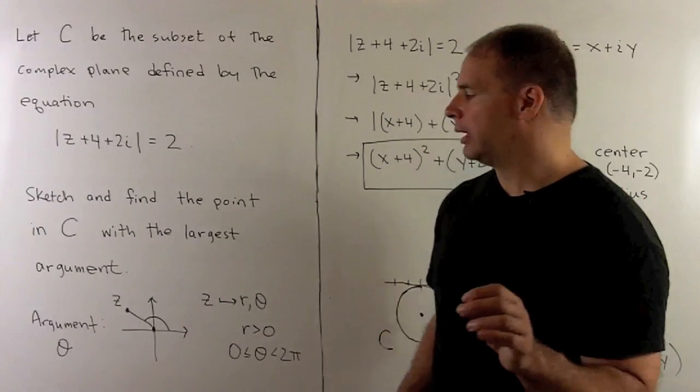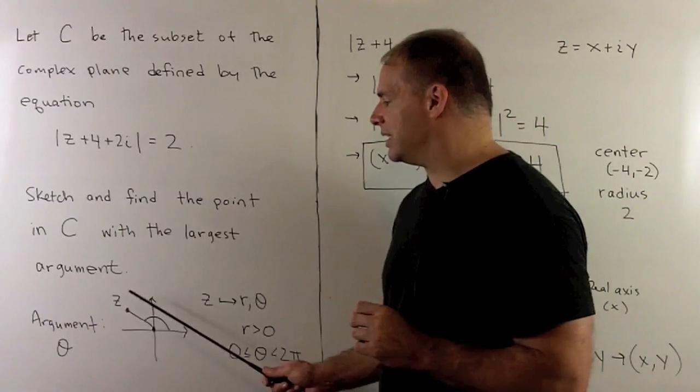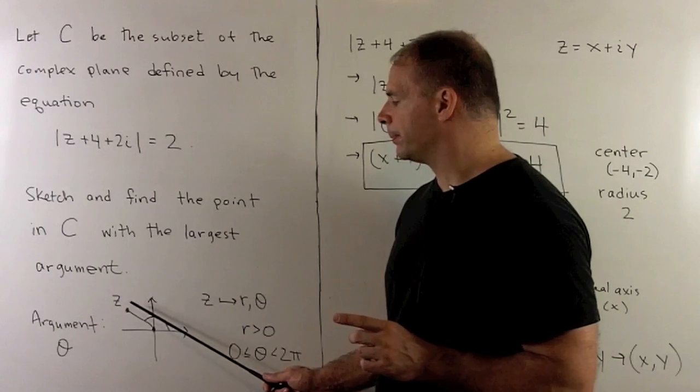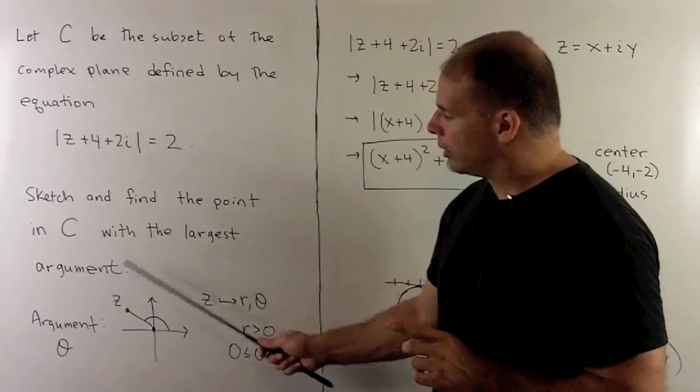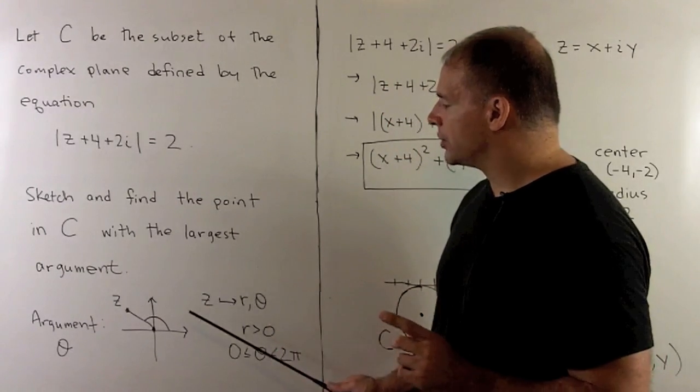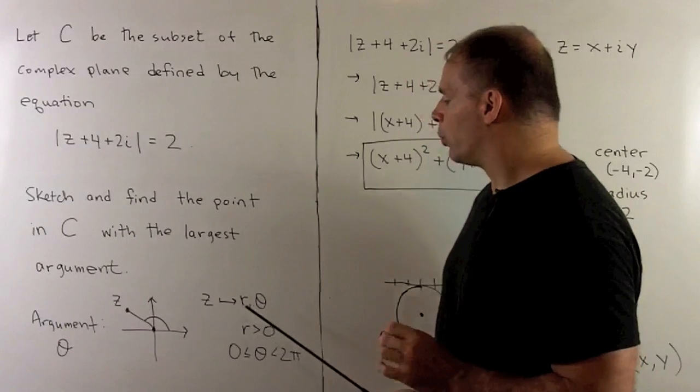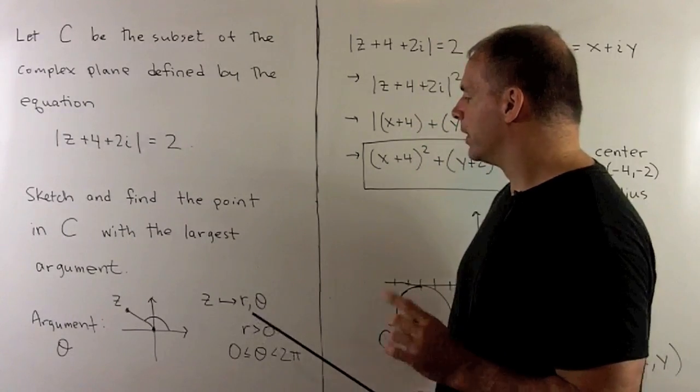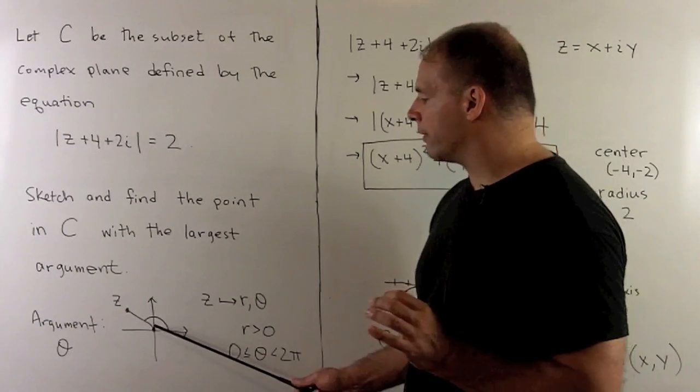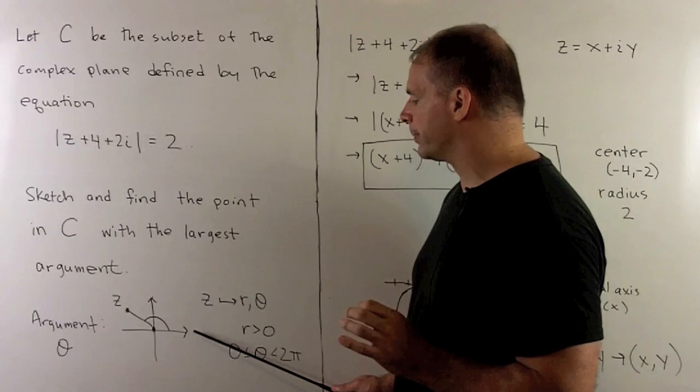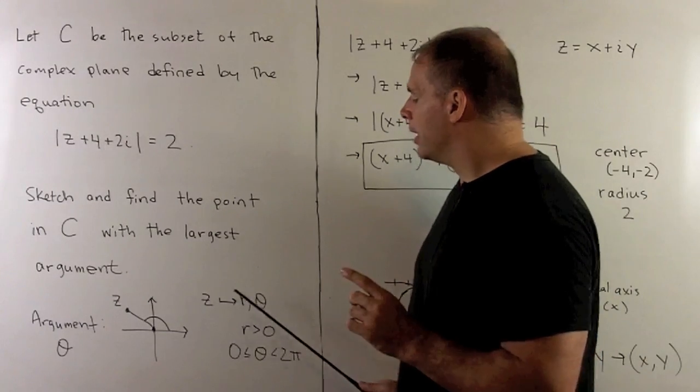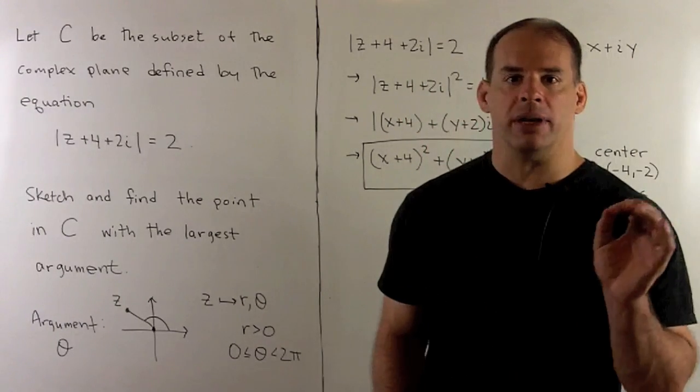Recall, what do we mean by argument? If I take any non-zero point z in the complex plane, we'll have polar coordinates. So, corresponding to z, we're going to have a positive radius and an angle that we measure from the positive real axis. That angle, I'm going to call the argument of z.